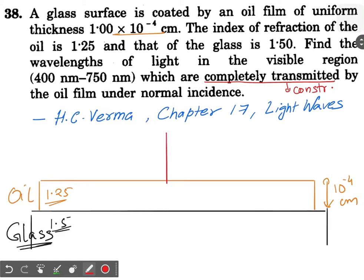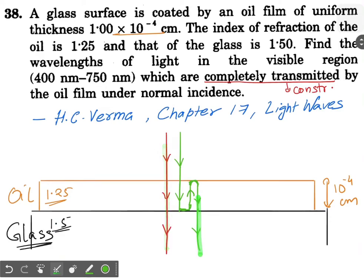Let's draw the rays. One ray passes through the medium directly. A second ray reaches the oil-glass interface, gets reflected upwards, then reflects again and comes back out. For diagram purposes I am drawing the reflection slightly sideways, but actually it goes straight down. This is your final reflection and the ray comes out on the other side.